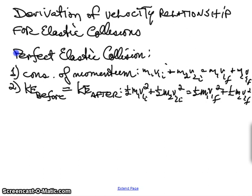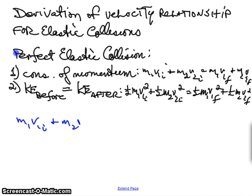But the kinetic energy equation, while it's useful, is a pain because everything is squared, and there's a simple way to do this. We can combine both equations and come up with a simpler one. We'll start off with the momentum equation: M1V1 initial plus M2V2 initial equals M1V1 final plus M2V2 final.